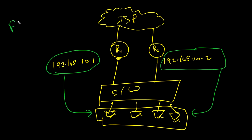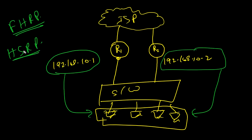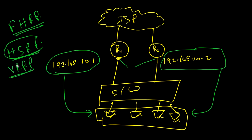So FHRP is a group of protocols. If I talk about Cisco proprietary protocols, the Cisco proprietary FHRP protocol is HSRP. There is also VRRP, which is an open standard protocol.